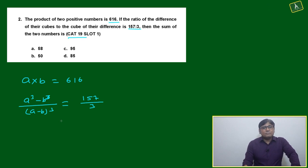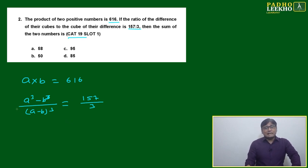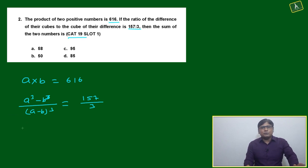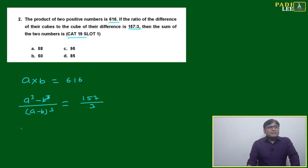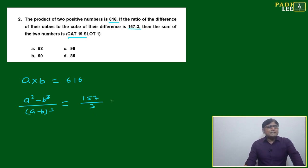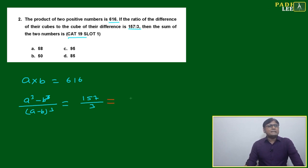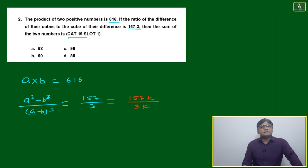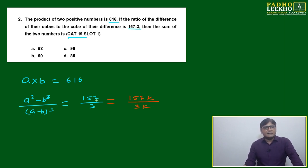Solving this equation is challenging, especially under time pressure. One technique is Vedic math: suppose a common factor is k, then we write 157k divided by 3k, where k is the common factor that has cancelled out. The base ratio is 157 to 3, but the actual values may be multiples of these.